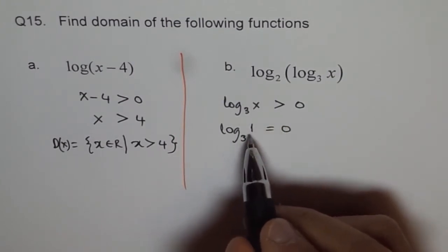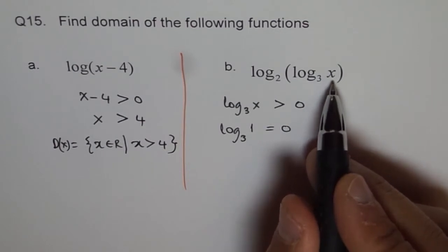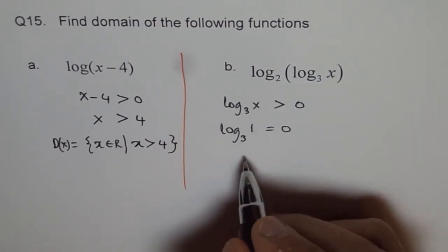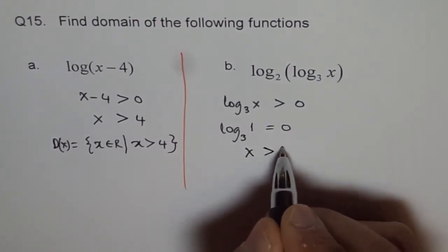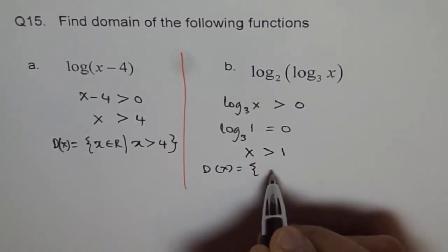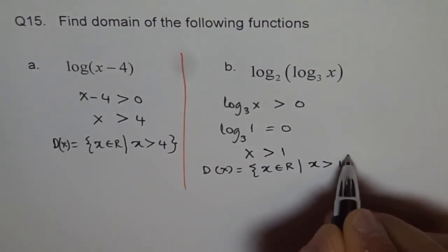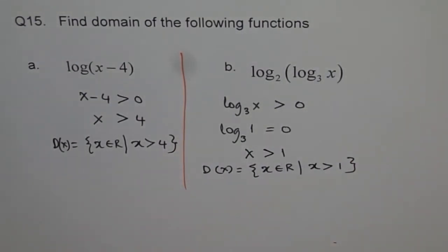So therefore, if log of 1 is 0, x could be anything greater than 1. So here the domain is that x should be greater than 1. And so we can write domain as, domain of this function is x belongs to real numbers such that x is greater than 1. That is how we are going to do it. Thank you.